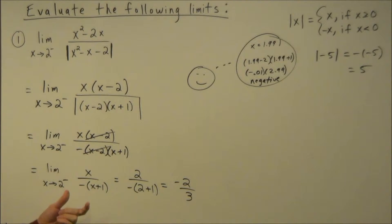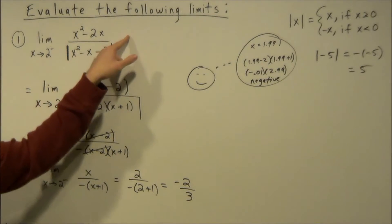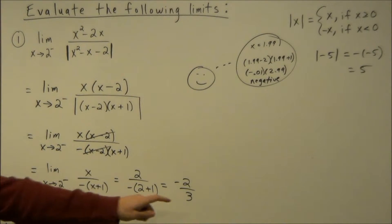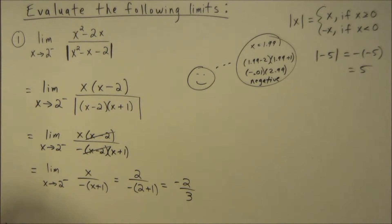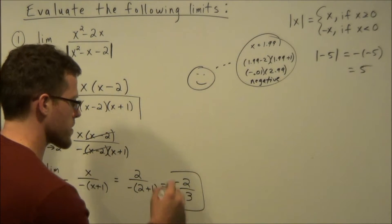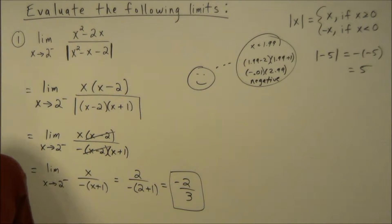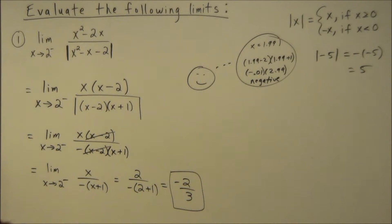This simplifies to negative 2/3. Remember, plugging in 2 initially gives 0 over 0, which is indeterminate, but our final answer is negative 2/3. Be careful: if you forget to change the sign you'll get positive 2/3, which will be a trap answer choice waiting for you.